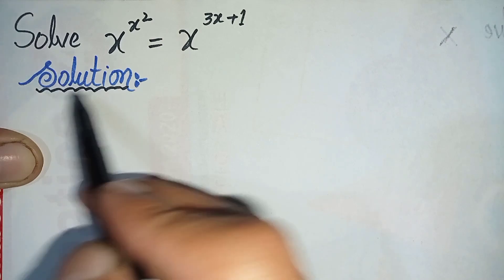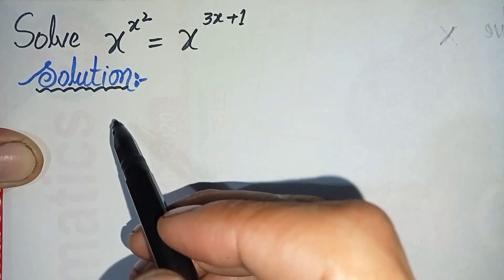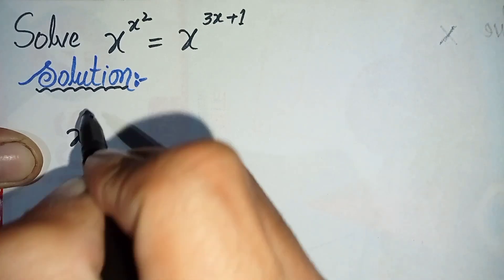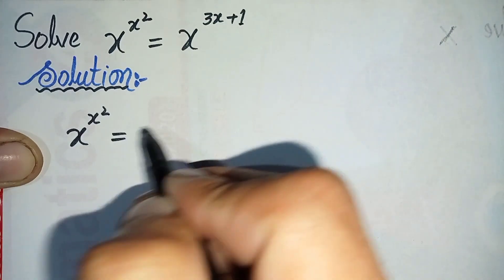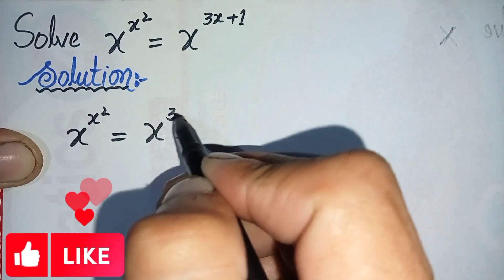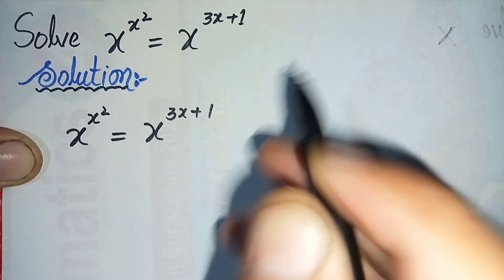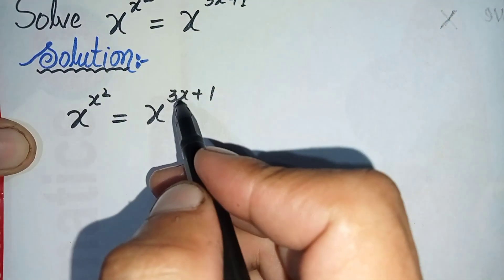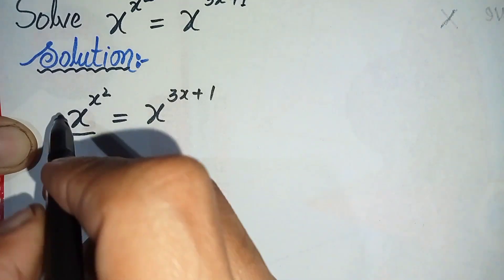To solve this question properly, first we will write the solution and rewrite the question. The question is x raised to power x² is equal to x raised to power 3x plus 1. Now let us divide both sides by x raised to power 3x plus 1, so the equation will become...